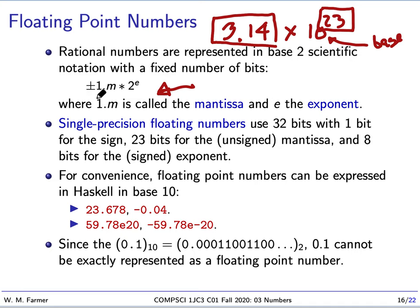The number can be negative or positive, and our mantissa is of the form 1.M times 2 to the E. We only have one choice for the leading digit — we're not allowed to have 0 here, and since this is base 2 there's only one other choice: 1. So we represent a rational number using a fixed number of bits.